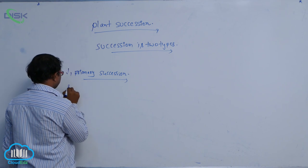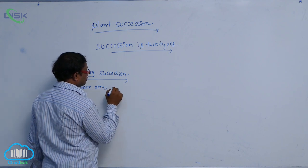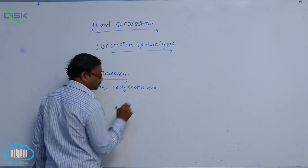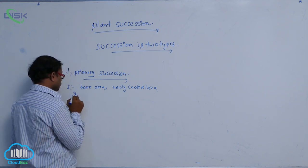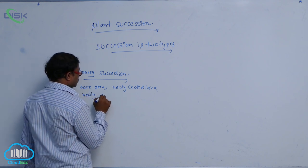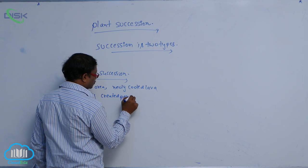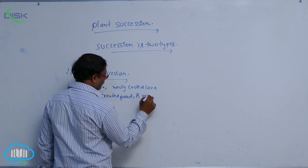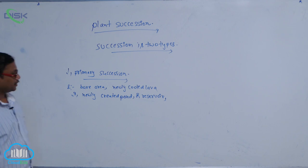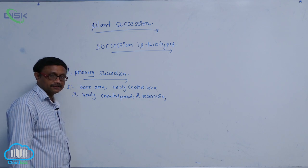Examples of primary succession include bare areas such as newly cooled lava, and newly created ponds or reservoirs.